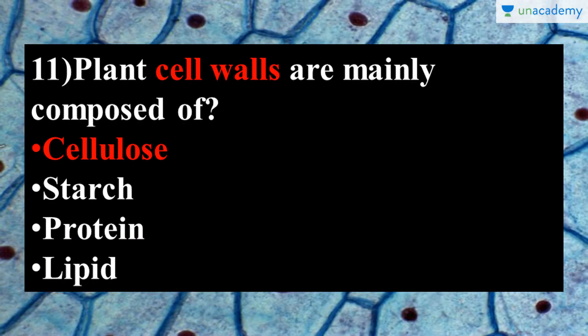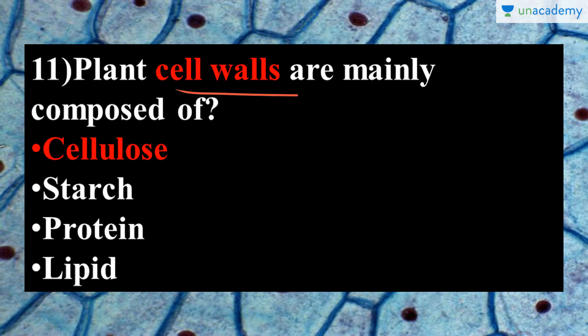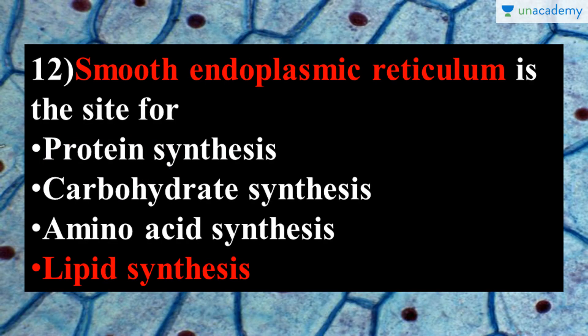The next question is: plant cell walls are mainly composed of what? Plants are organisms that have a cell wall, unlike animals. The basic major component of plant cell walls is cellulose, which provides structural and mechanical stability to the cell wall. So the correct answer is cellulose.